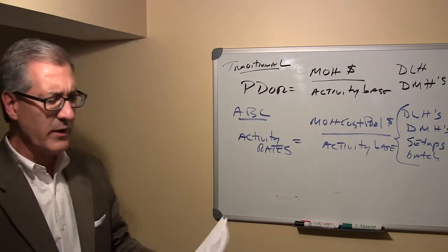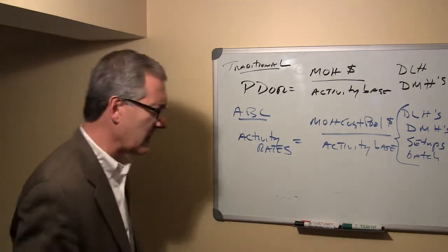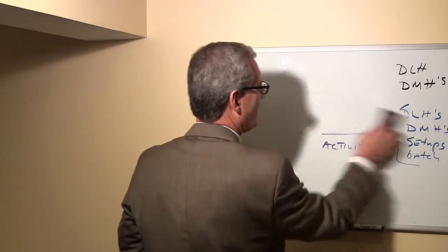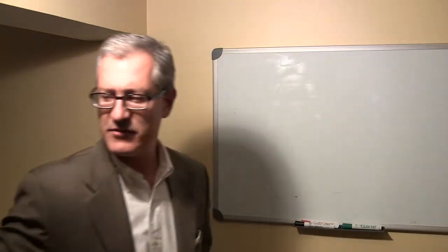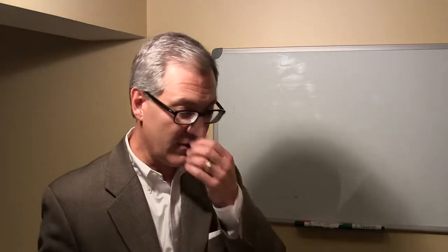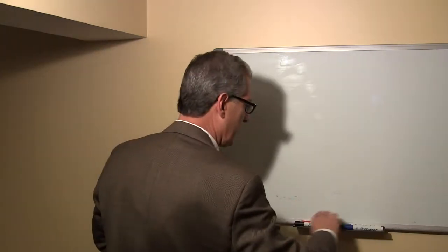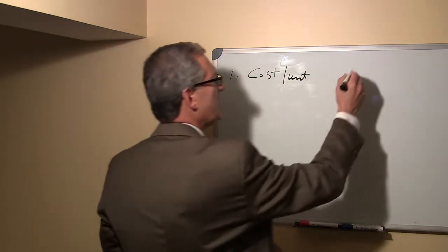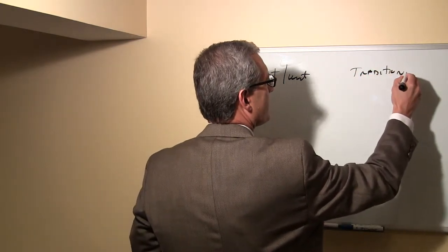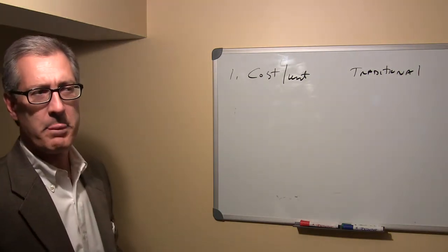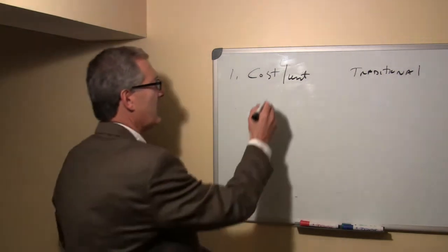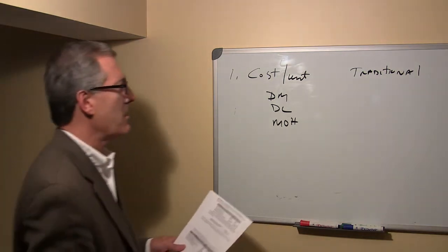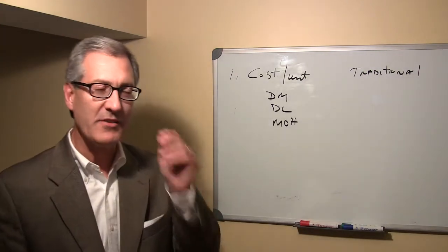Let's go over Exercise 3-10 again. We did this in class, but some students have asked me to go over it. I'll make the assumption that you have the problem in front of you — that is Exercise 3-10, there was a handout in class. The first part of that problem, I was asking you to calculate cost per unit using the traditional approach: a single predetermined overhead rate to calculate cost per unit, which is direct materials, direct labor, and manufacturing overhead. In that problem, manufacturing overhead was applied on the basis of direct labor hours.